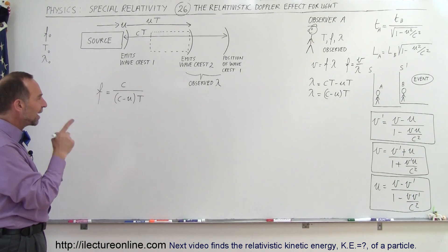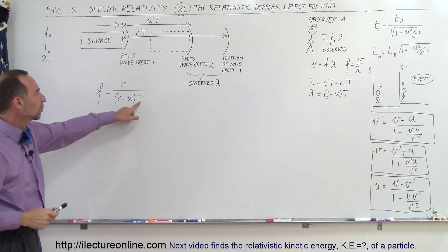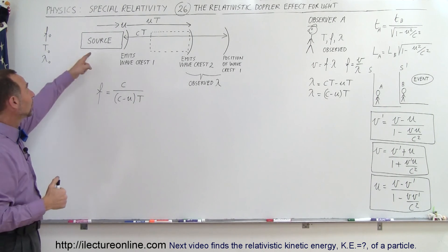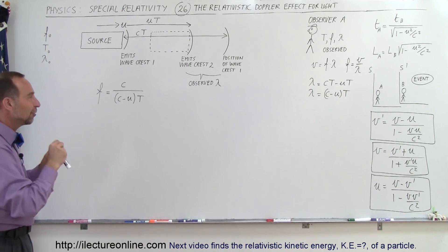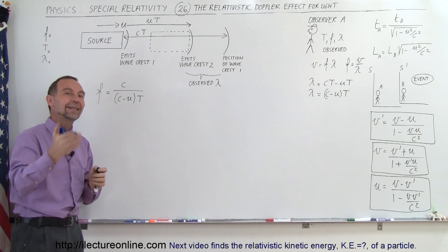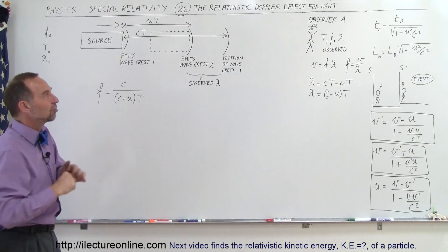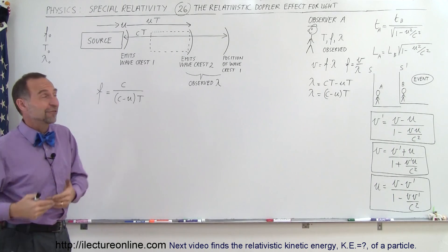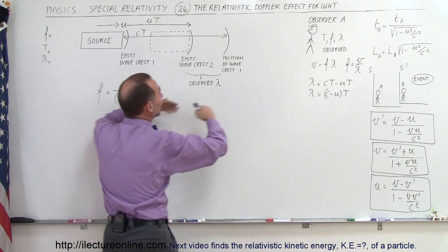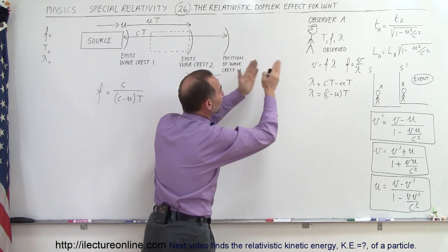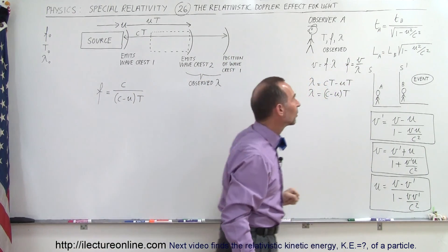Now we want to find the relationship between the period as observed by the observer and the period as put out by the source. This is where the difference comes in between the Galilean transformation equations and the Lorentz transformation equations that deal with relativistic effects. The time as observed by the source and the time as observed by the observer are not the same — we have to take relativistic time dilation into account.